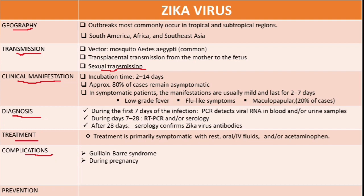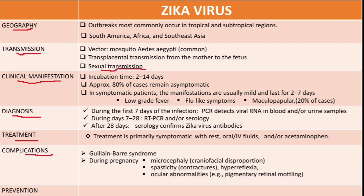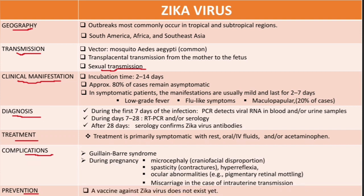Congenital defects from Zika infection during pregnancy include microcephaly with craniofacial disproportion, spasticity with contractures (joint immobility), and hyperreflexia. In some cases, there may be ocular abnormalities such as pigmentary retinal mottling. Miscarriage can also occur.